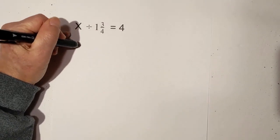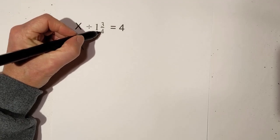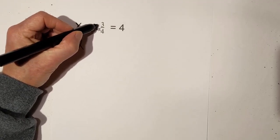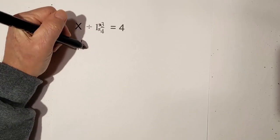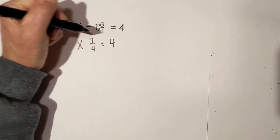In order to undo division, we're going to use multiplication. First, let's convert this to an improper fraction. Remember the circle trick. 4 times 1 is 4, plus 3 is 7 fourths equals 4.